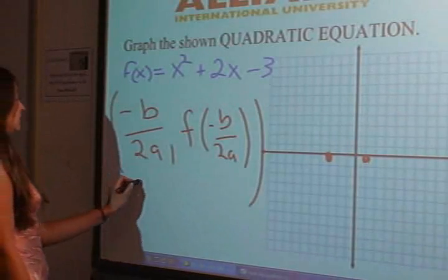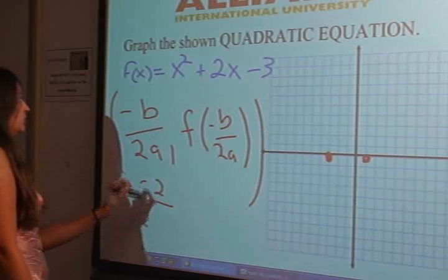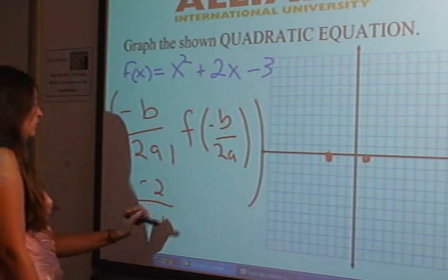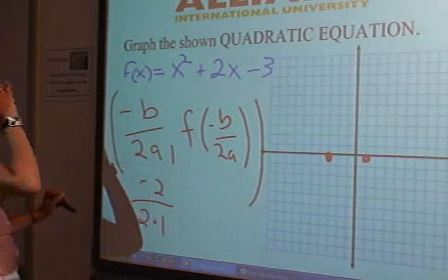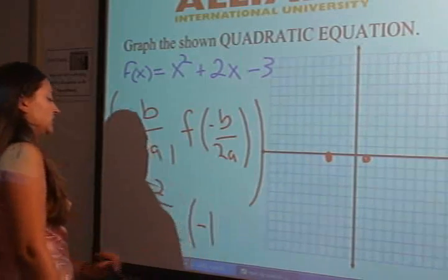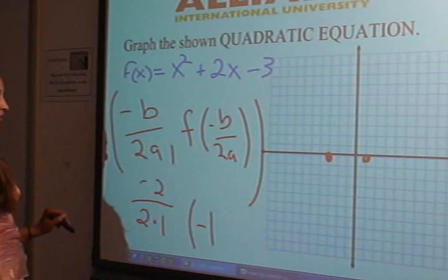Negative b is negative 2 over 2 times a, which is 1. That gives us negative 1. So we'll put that here because that's going to be our x-coordinate.